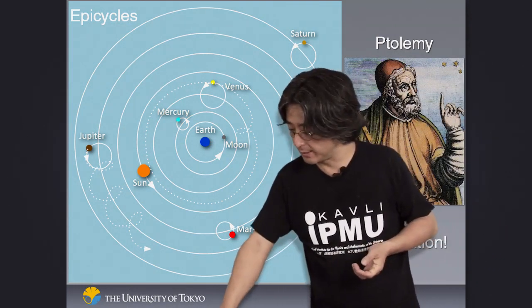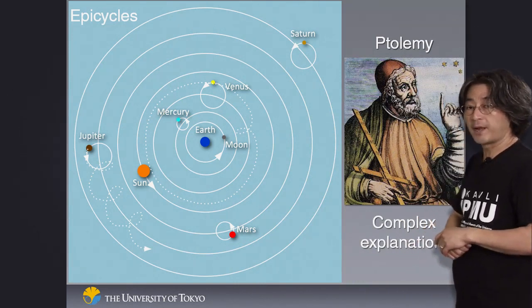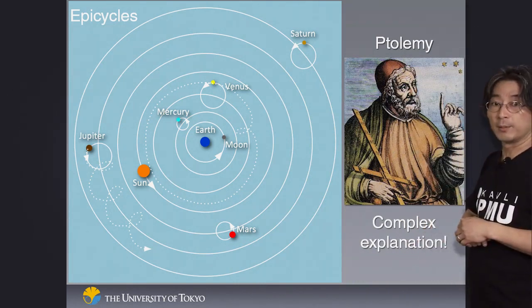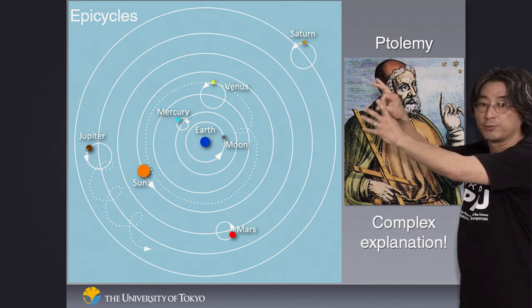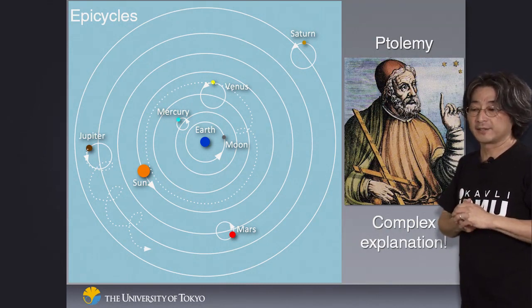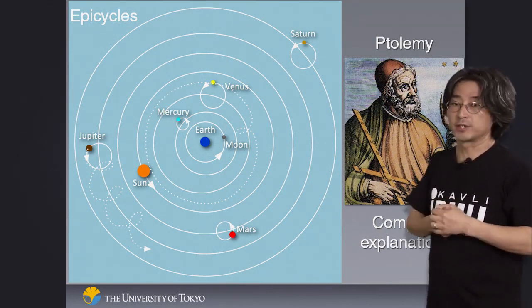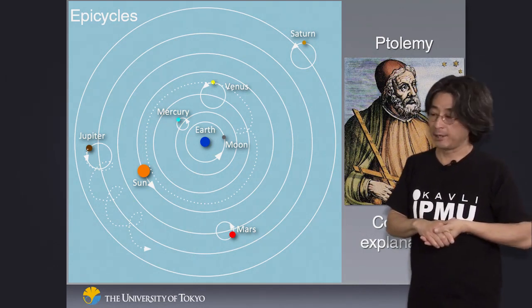But as you can see, this is getting pretty complicated. As the observation got better and better, even this idea didn't work anymore. They started putting another epicycle on top of an epicycle and so on. It got more and more complex. At some point, people realized this is just way too complex. The universe should have a simple understanding. This can't possibly be right.